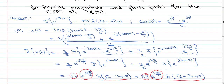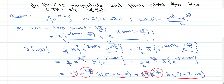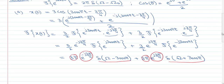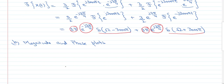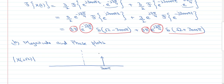Now we go to the second part: provide magnitude and phase plots for the CTFT. We have obtained the formula, so now we want to give the phase and magnitude plots. The magnitude plot is pretty simple — it is simply two impulses at 3000π and −3000π, and they will each have an area of 3π.